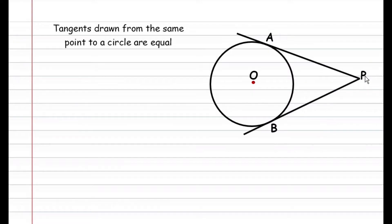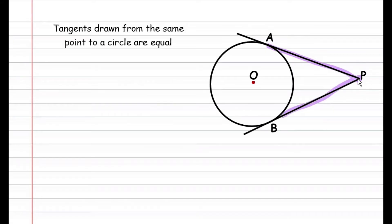I want you to realize that we're speaking about the length from the point P to A, which is the point of contact of the tangent and the circle. We're speaking about that length — not this full line, only from P to A. Likewise, this is equal to the length from P to B, also the point of contact of the tangent with the circle.